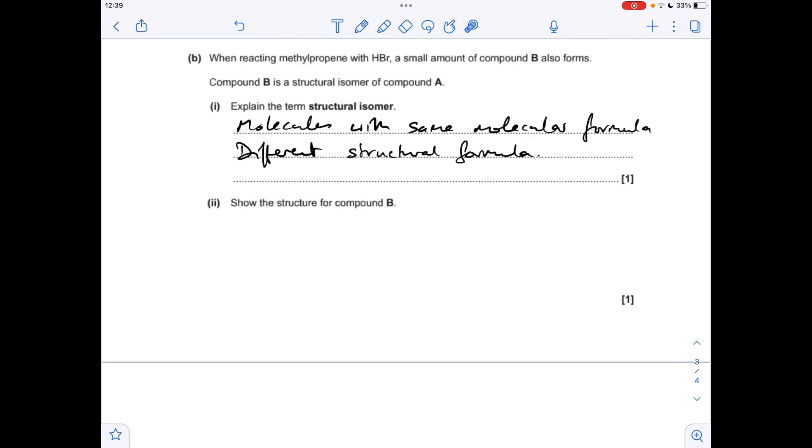Part B is just a memory test for the definition: structural isomers are molecules with the same molecular formula with different structural formula.